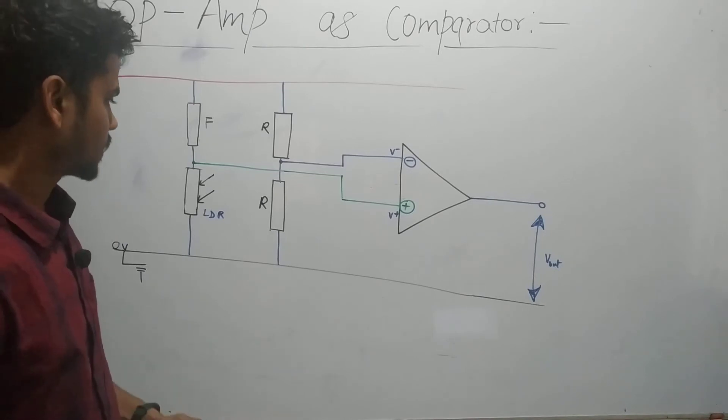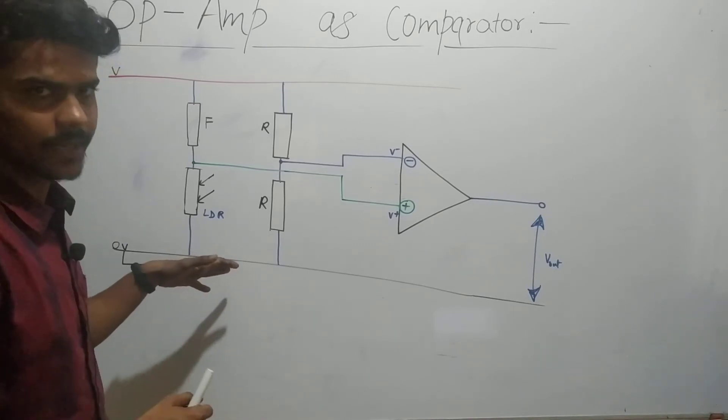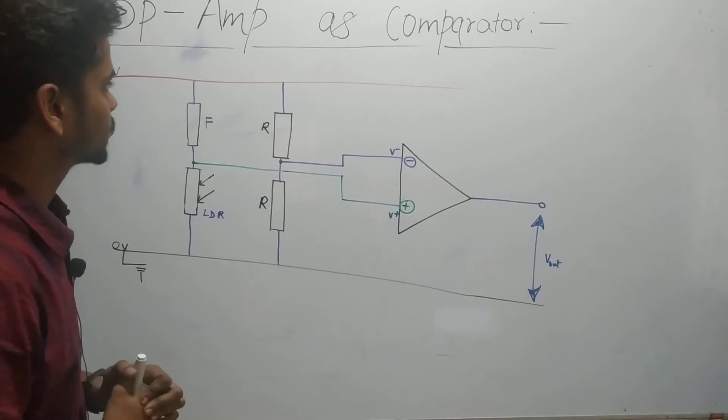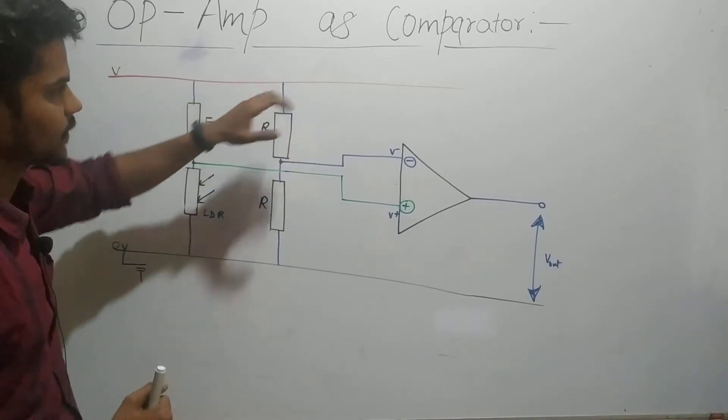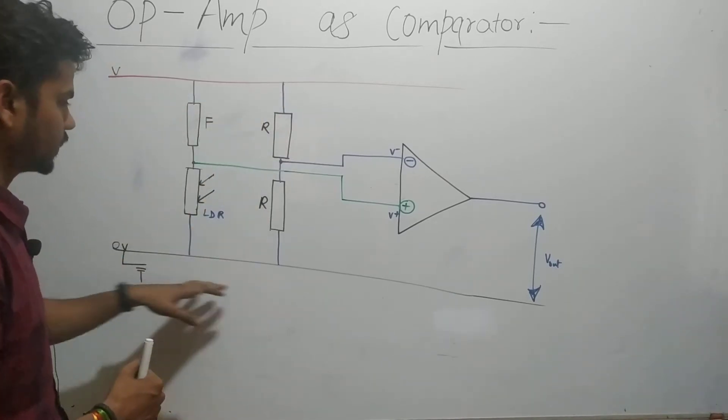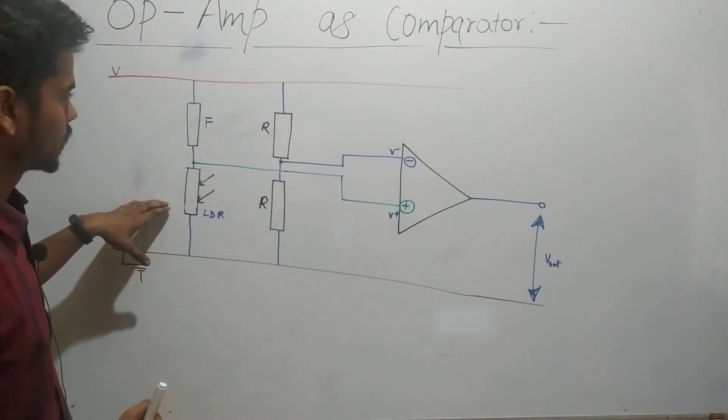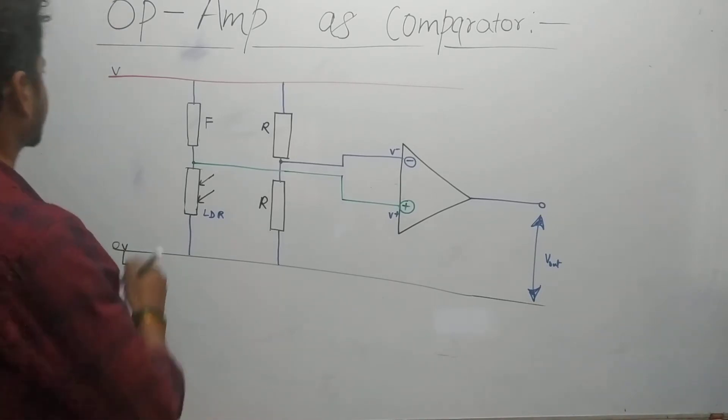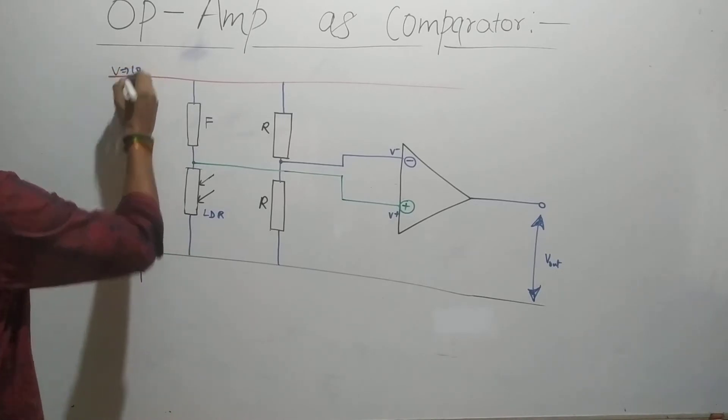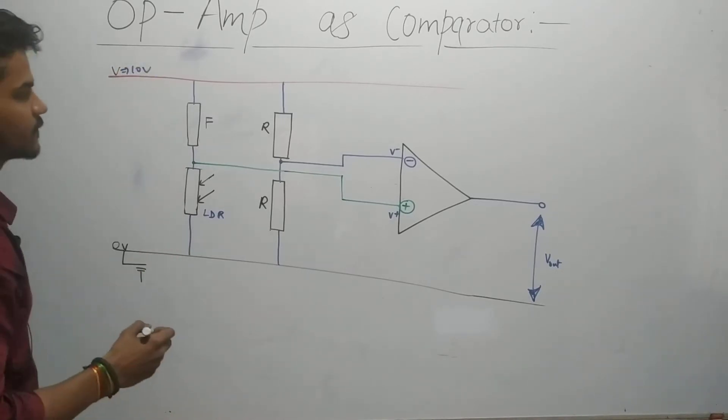We are changing its resistance value based on the amount of light falling on it. This setup uses a main line which has voltage V, a ground line which has zero voltage, and we are making connections as shown. Let's say this is 10 volts.